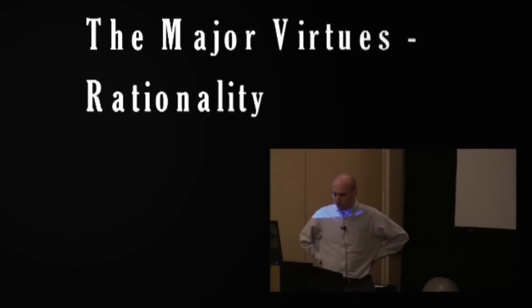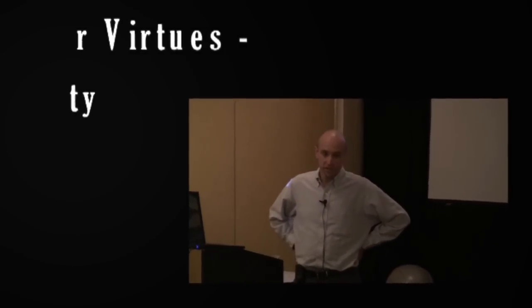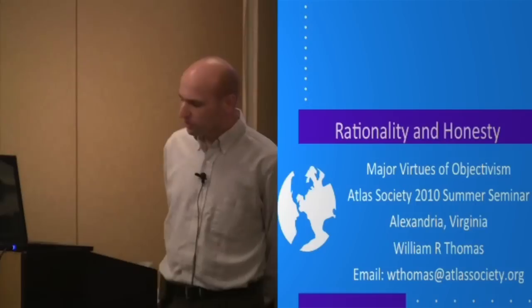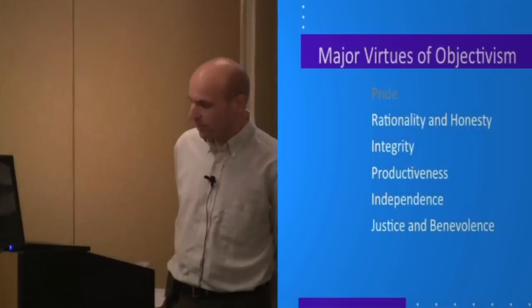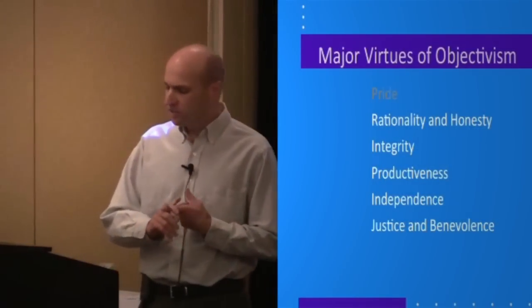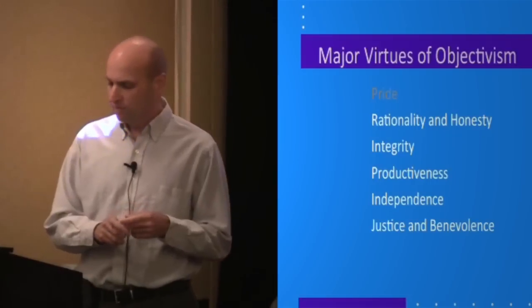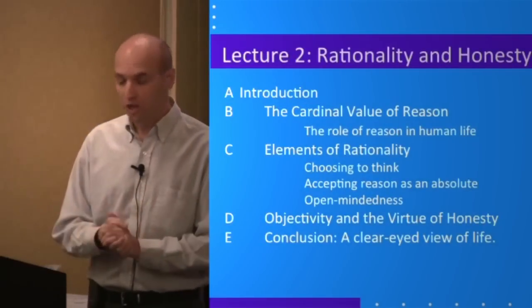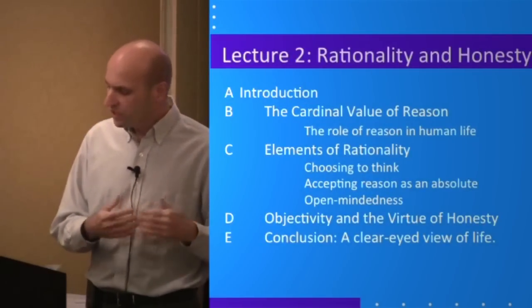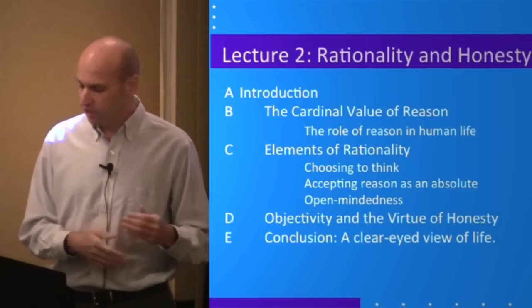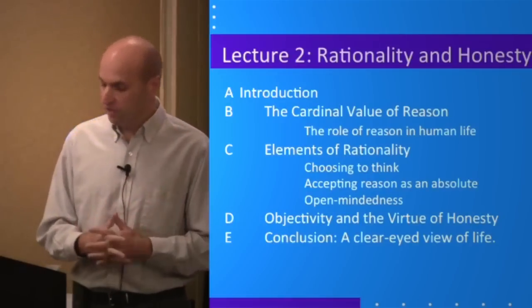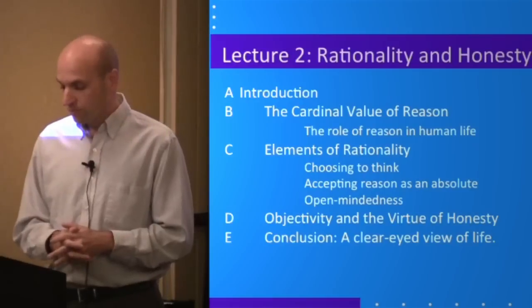Many thinkers from ancient Greece to today have thought of reasonableness or prudence as a virtue; others prize moral wisdom, the ability to determine right from wrong. But the Objectivist virtue of rationality is distinctive on several accounts. First, rationality is the prime or most fundamental virtue. Ayn Rand said rationality is man's basic virtue, the source of all his other virtues, because reason is a human being's primary means of survival.